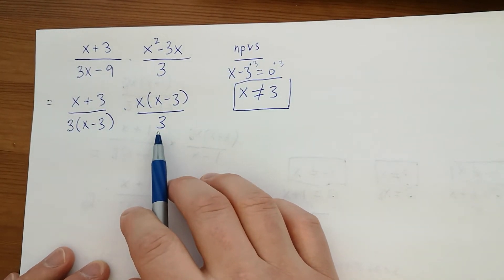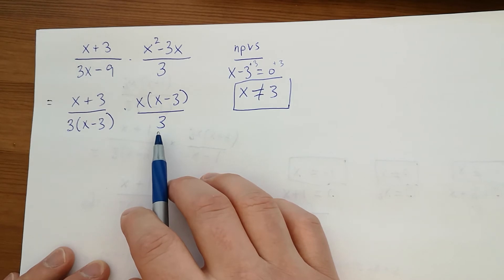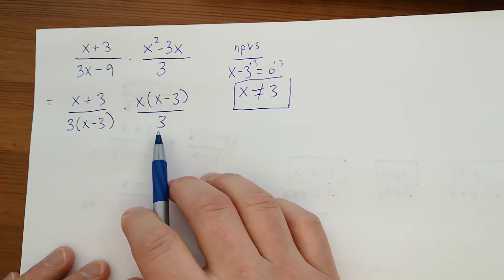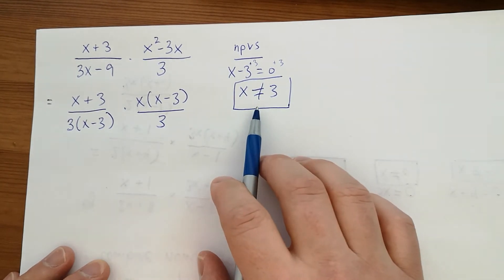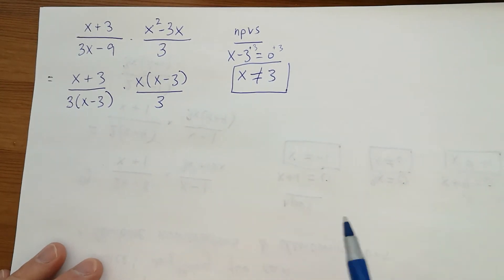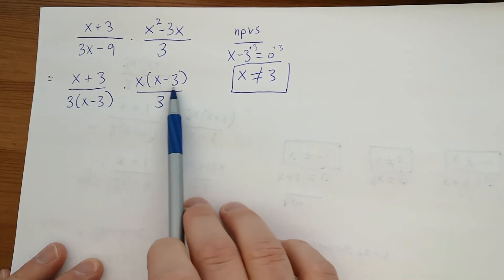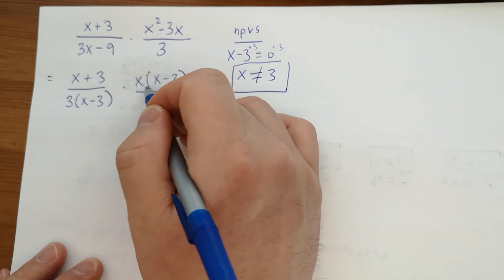This doesn't give us an NPV because there's no x. This can't equal 0, so it's okay. This is our only non-permissible value. Check this out: we've got (x-3) in brackets on both sides. Those divide out.